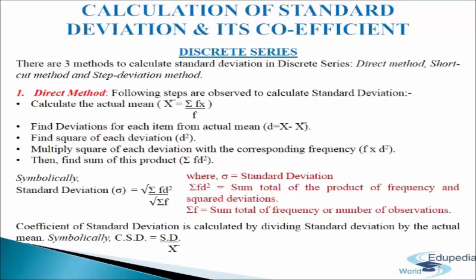First we will discuss the direct method. The following steps are observed to calculate standard deviation. First, calculate the actual mean: mean equals sigma fx divided by sigma f. Next, find deviation for each item from the actual mean: d equals x minus mean. Third, find the square of each deviation, d square. Next, multiply the square of each deviation with the corresponding frequency: f multiplied by d square. And last, find the sum of this product: sigma fd square.